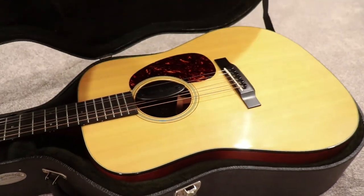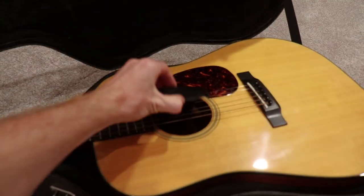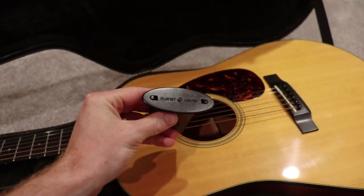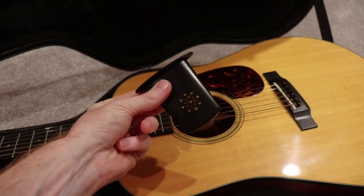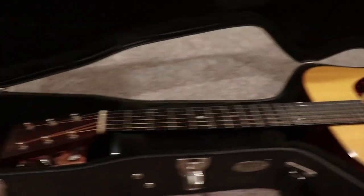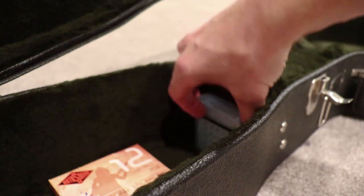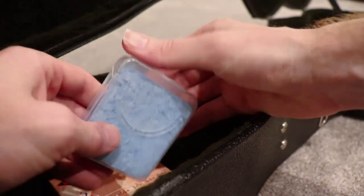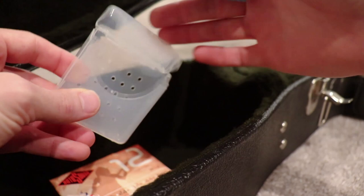Now I have this Planet Waves sound hole humidifier that I keep in the guitar every time it's in the case, and I also have this custom built humidifier that I keep in the top of the case. This is just a travel Q-tip case that I drilled some holes in and then put a sponge into to give me some more extra humidity control.